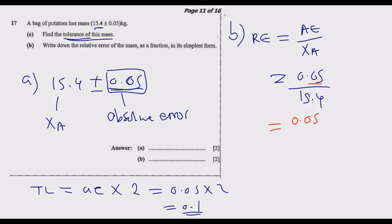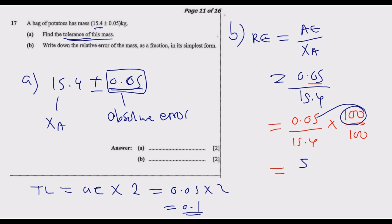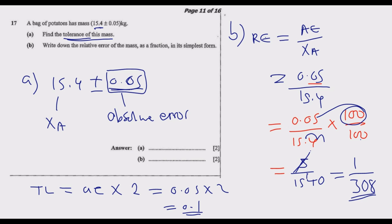We multiply both numerator and denominator by 100 over 100 — since multiplying by 1 doesn't change the value. This gives us 5 over 1540. Dividing further by 5: 5 into 5 is 1, 5 into 1540 is 308. So the relative error in its simplest form is 1 over 308.